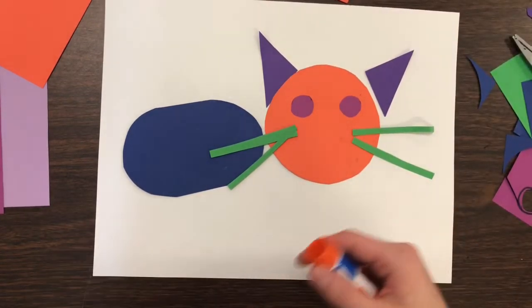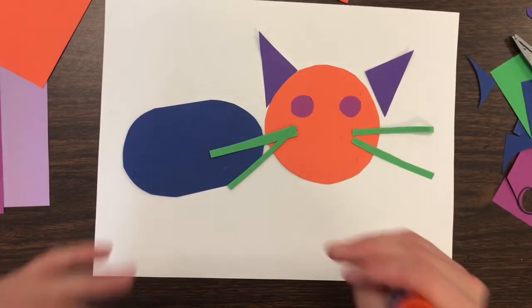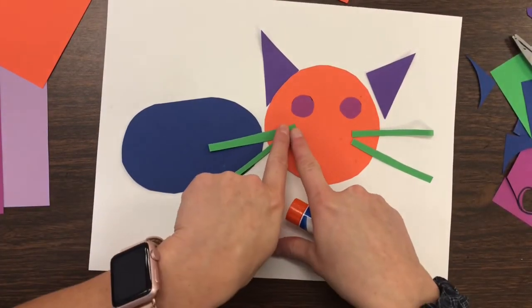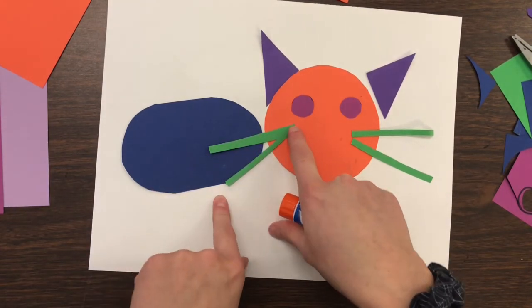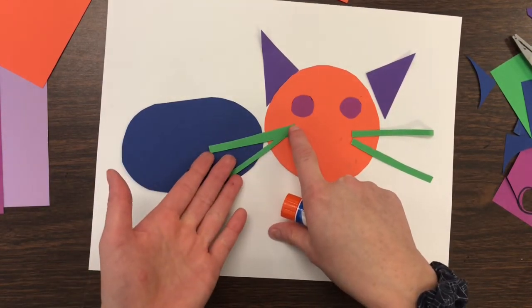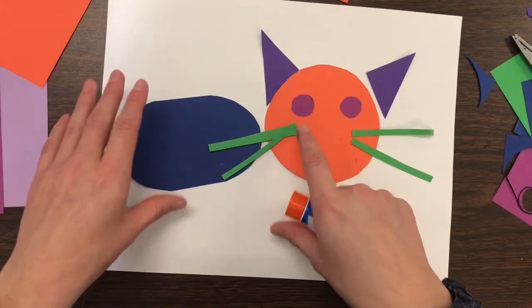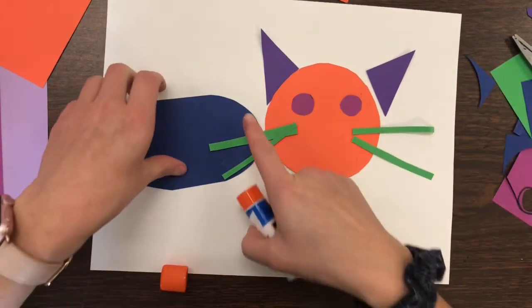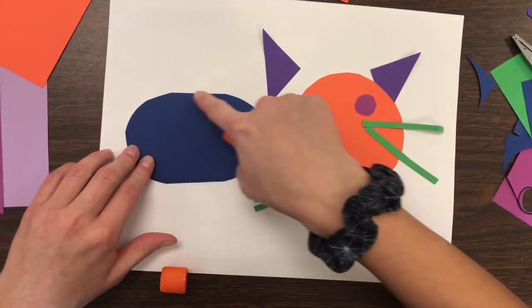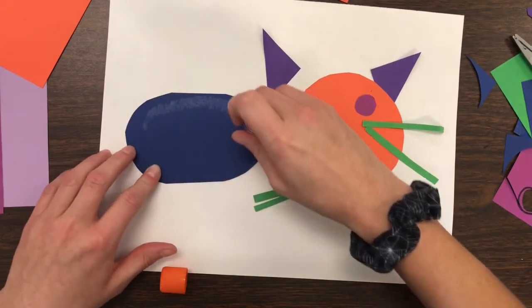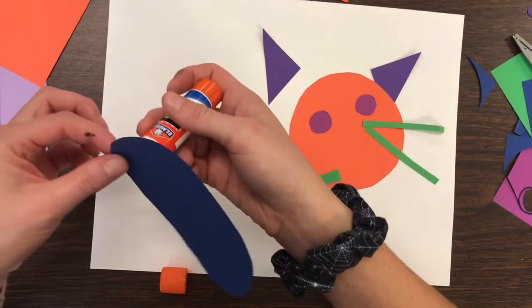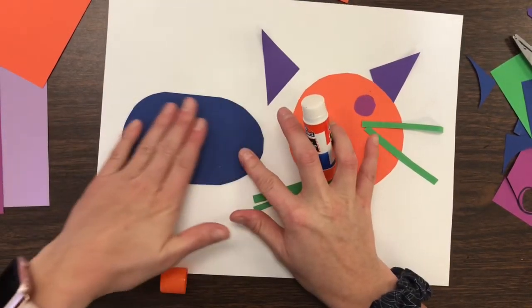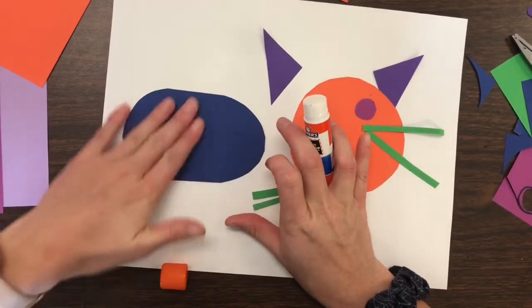All right. And when you're ready to glue, you're going to start with the bottom layer first. So see how my whiskers are going on top of my body? That means I can't glue the whiskers down first. I have to glue the body down. So I'll just put a little bit of glue all around the edge. So I'm just going to make one line around the edge. And then I can glue that down. Give it a little rub. Make sure it's nice and stuck.